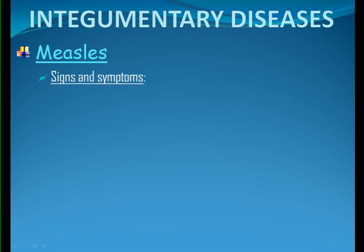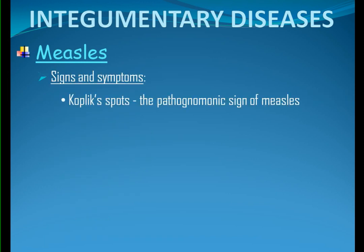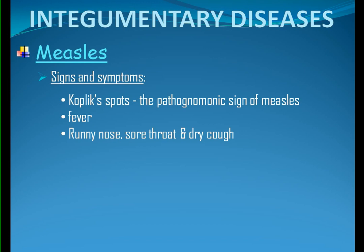Signs and symptoms. First is Koplik's spots. This is the pathognomonic sign of measles. It is the presence of tiny spots in the mouth that indicates an early phase of measles. Next is fever, runny nose, sore throat, and dry cough. Conjunctivitis, and maculopapular rash. It is characterized by flat red areas and raised skin lesions. Macule means a discolored flat skin lesion while papule means small raised bumps.